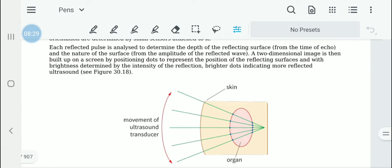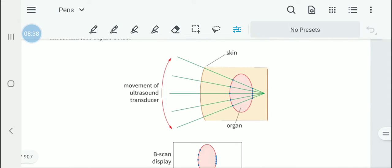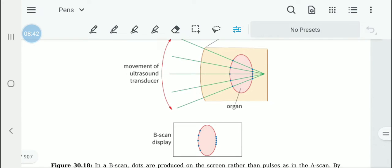This is what happens in a B scan display. The ultrasound transducer is moved on the surface, and when it comes through we will actually see this kind of image.